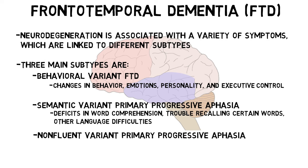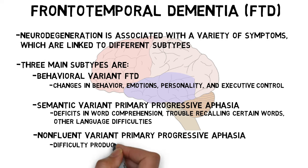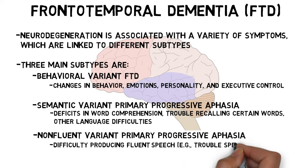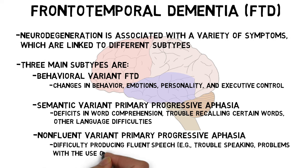Patients who have the non-fluent variant primary progressive aphasia have difficulty producing fluent speech, which might involve trouble speaking at all or problems with the use of grammar to produce understandable speech.